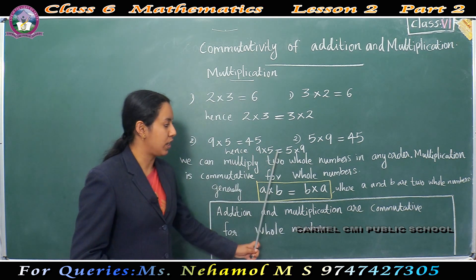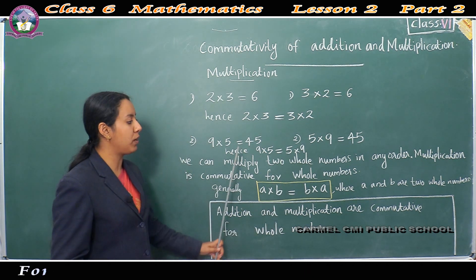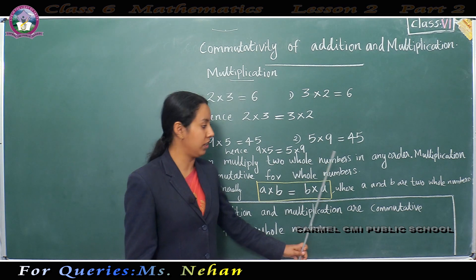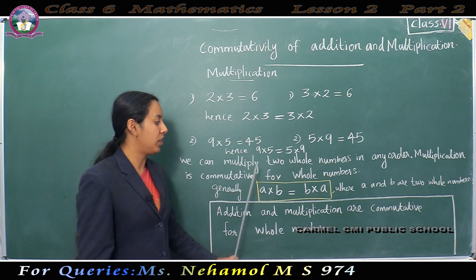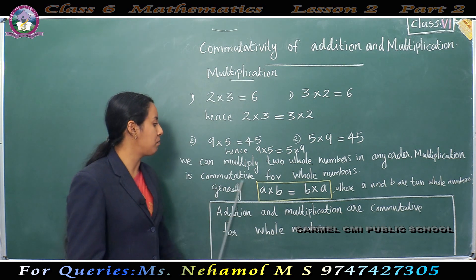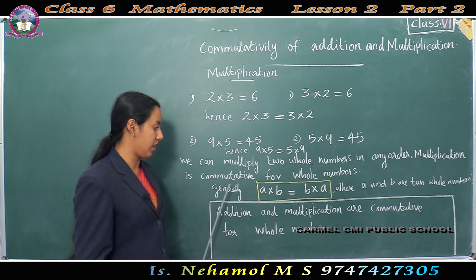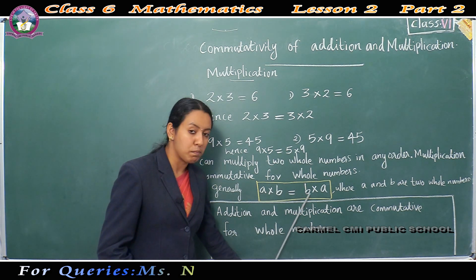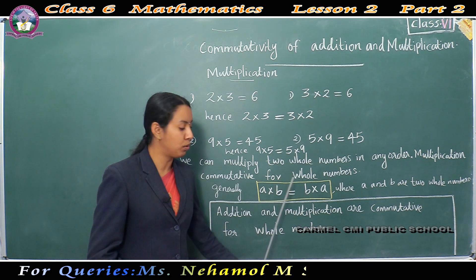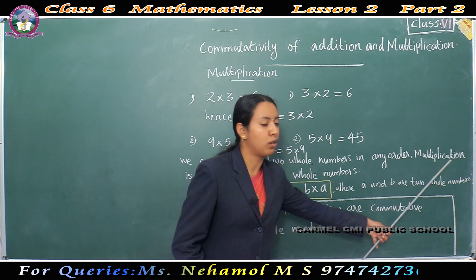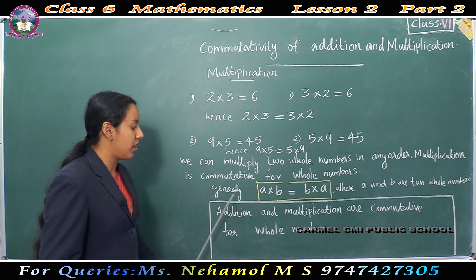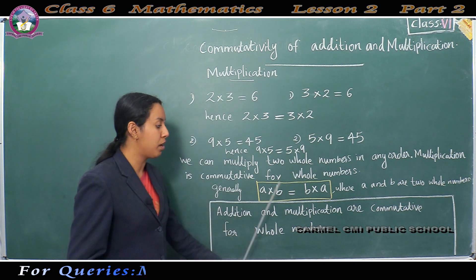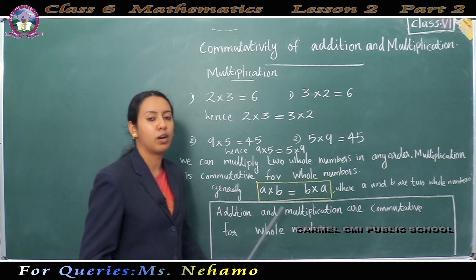Hence, 9 into 5 is equal to 5 into 9. We can multiply 2 whole numbers in any order. Multiplication is commutative for whole numbers. Generally, if A and B are two whole numbers, then A into B is equal to B into A. Addition and multiplication are both commutative for whole numbers.